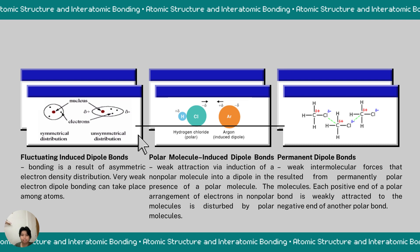First is the fluctuating induced dipole bonds. This bonding is a result of asymmetric electron density distribution. It is a very weak electron dipole bonding.